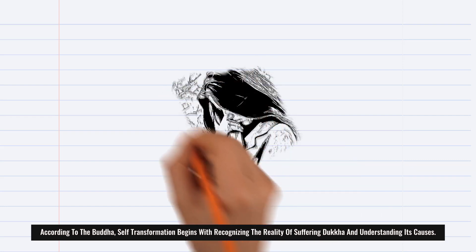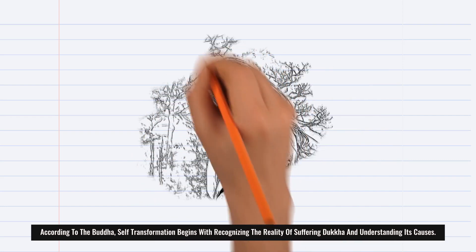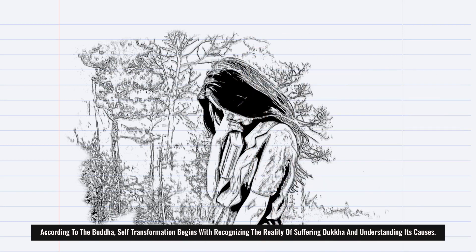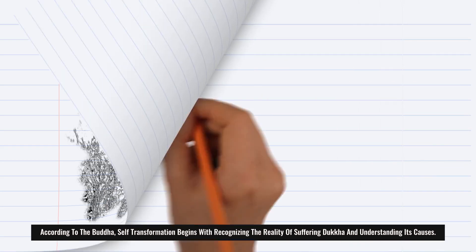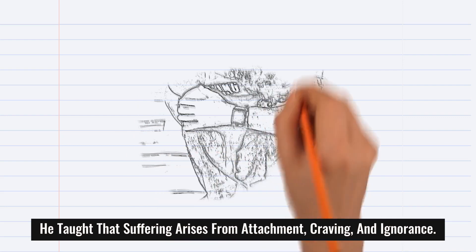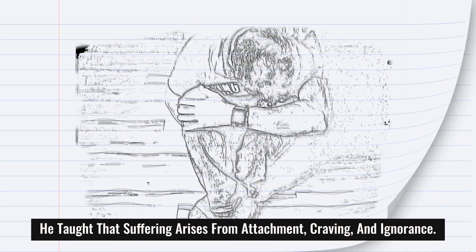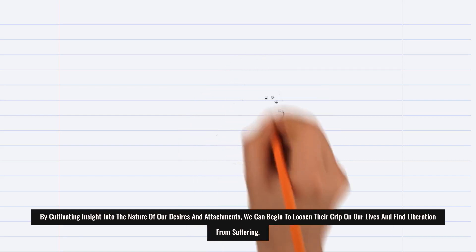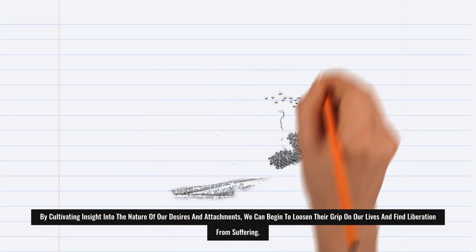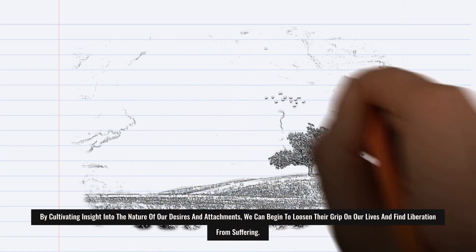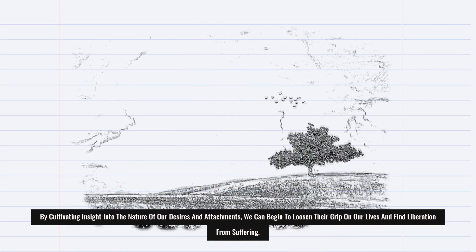According to the Buddha, self-transformation begins with recognizing the reality of suffering (dukkha) and understanding its causes. He taught that suffering arises from attachment, craving, and ignorance. By cultivating insight into the nature of our desires and attachments, we can begin to loosen their grip on our lives and find liberation from suffering.